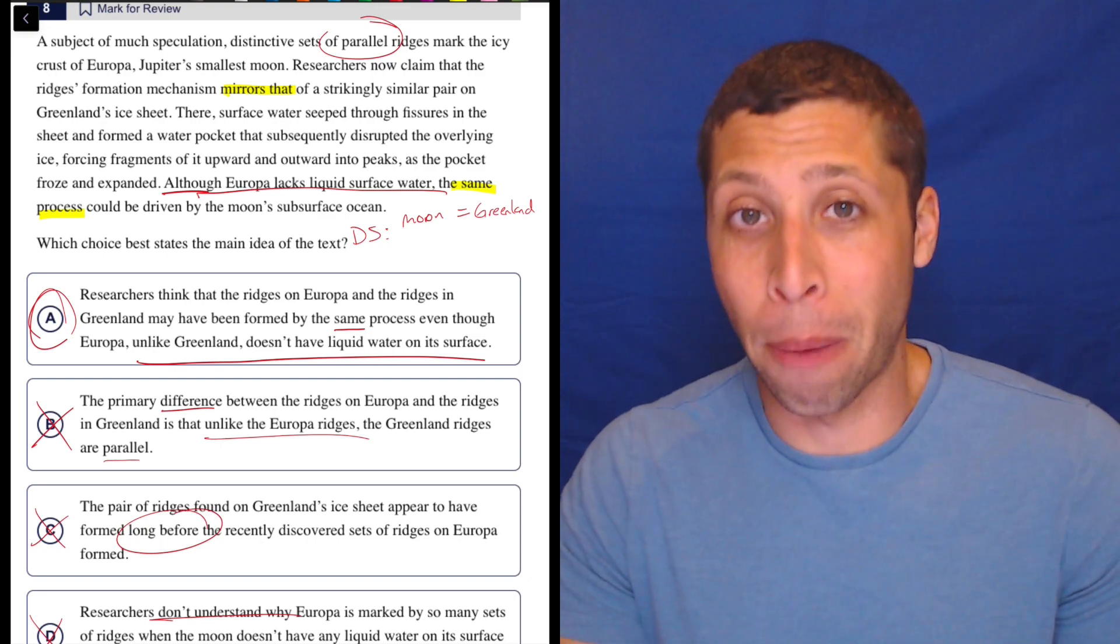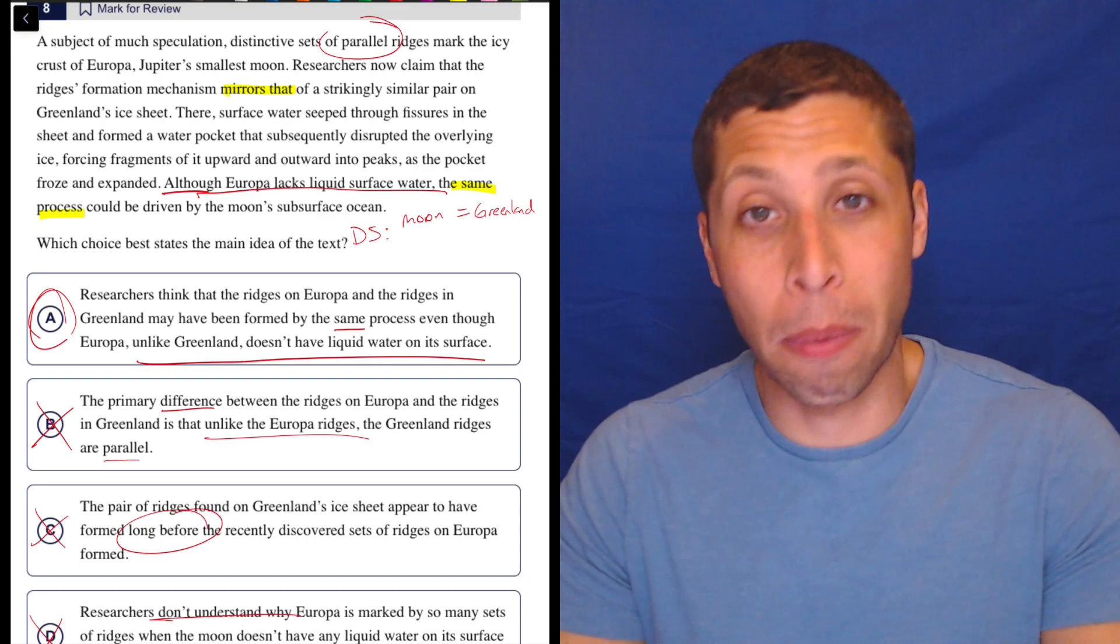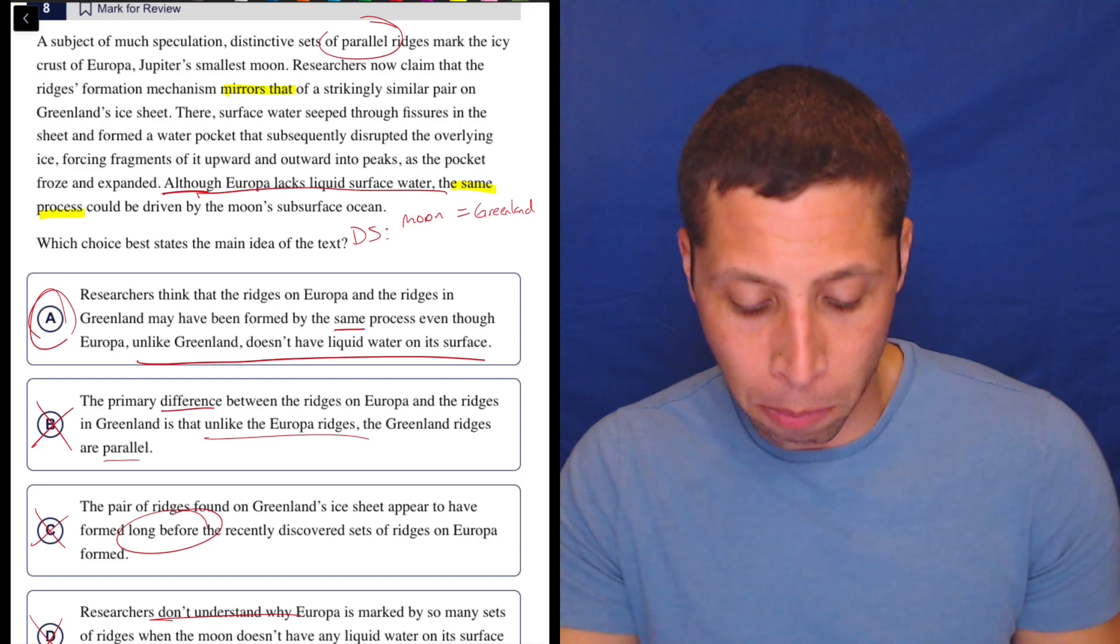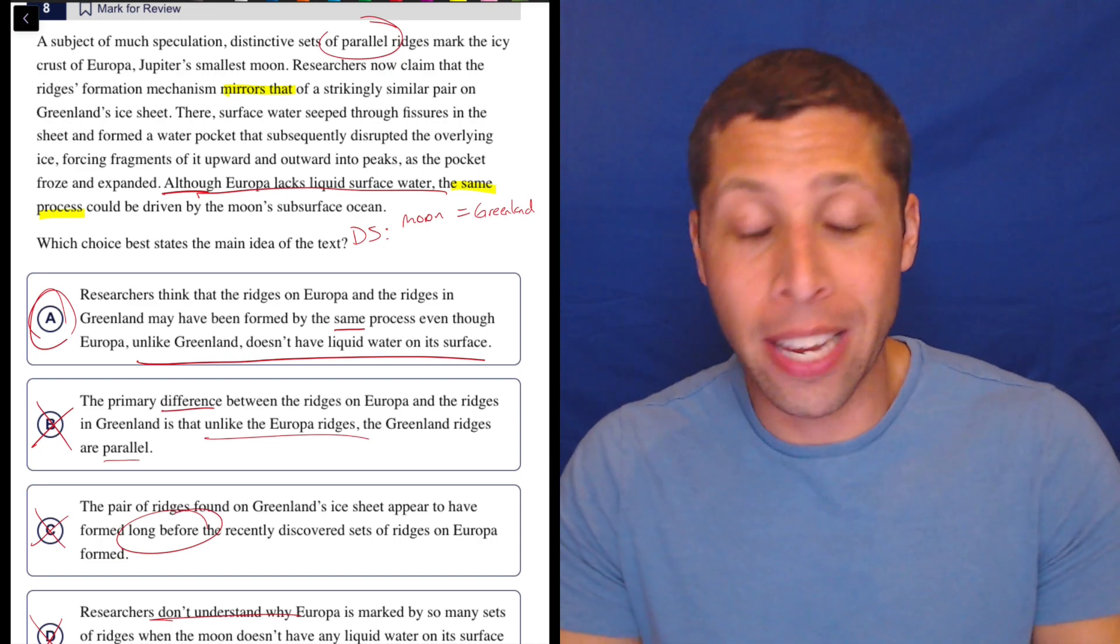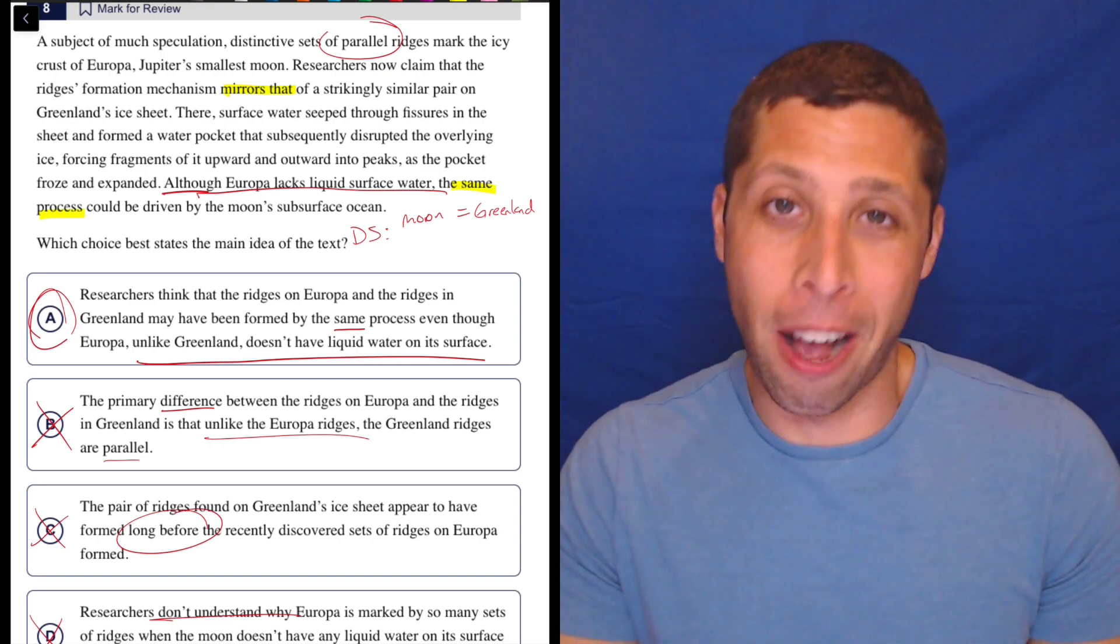This is why dumb summaries are so great. I think the first time I ever did this question, I was really torn between A and B. But you know why? It was because I didn't dumb it down enough. And if I had dumbed it down, A is the answer very, very quickly and very confidently.